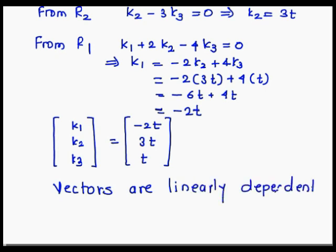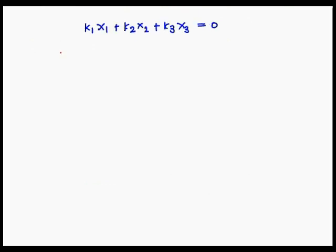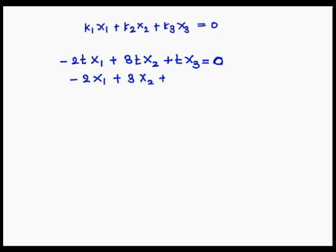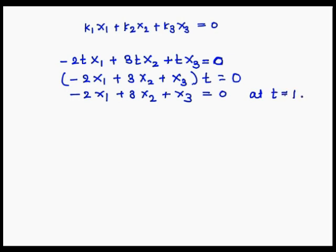Whenever the vectors are linearly dependent, we need to find the relation between them. We substitute the values of k1, k2, k3 into the linear combination: -2t*x1 + 3t*x2 + t*x3 = 0. Taking t common: t(-2x1 + 3x2 + x3) = 0. Putting t = 1, we get the relation: -2x1 + 3x2 + x3 = 0. This is the relation between the vectors. Hope you understand.